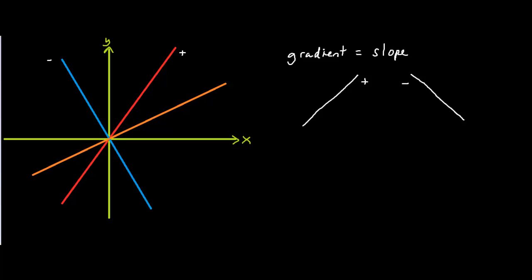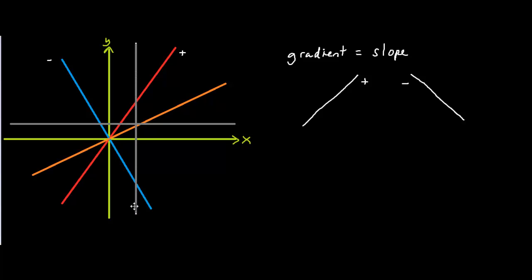Now if we have a straight horizontal line like this one, it has no slope. And if we have a straight vertical line like this one, it also has no slope. So this straight horizontal line would have a gradient of zero and this straight vertical line would have a gradient of zero.